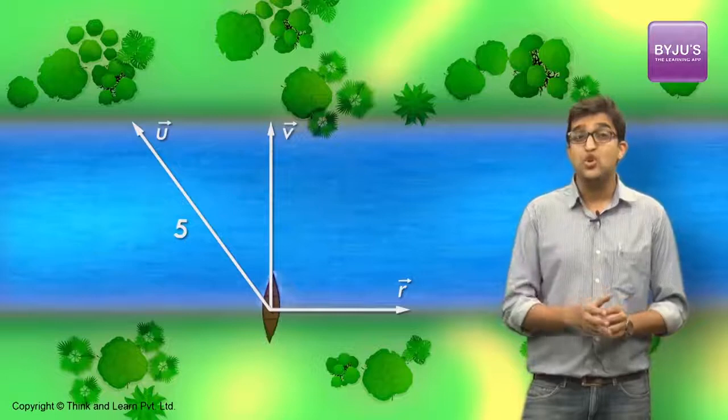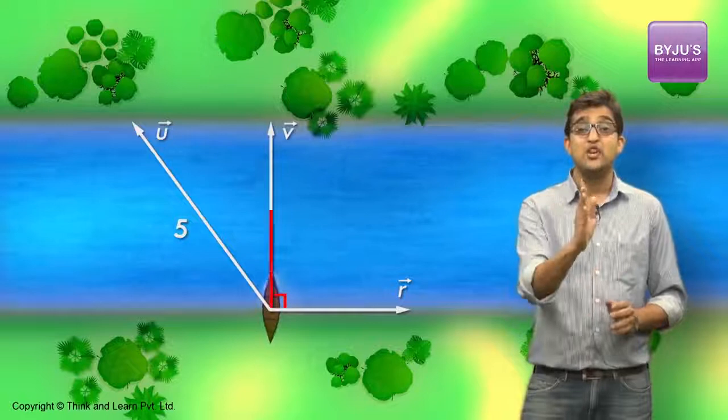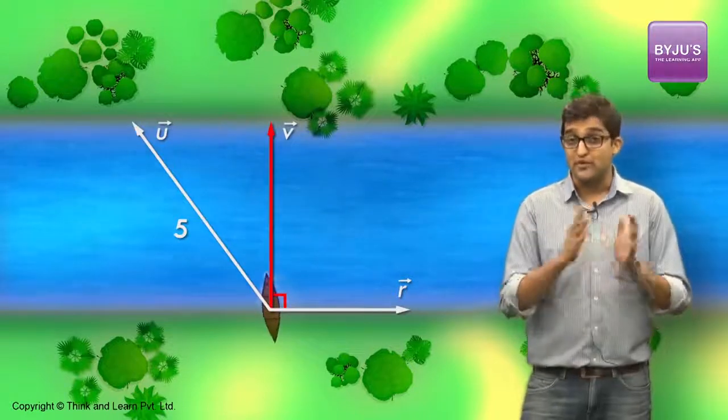And if the boat needs to cross in the shortest possible path, it should cross perpendicular to the direction of flow of the river.